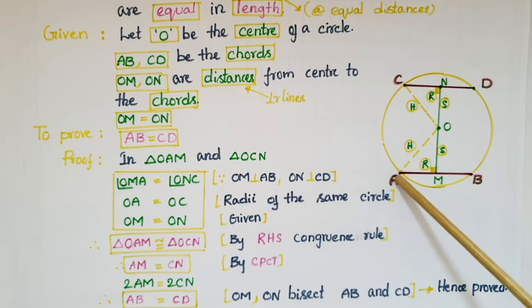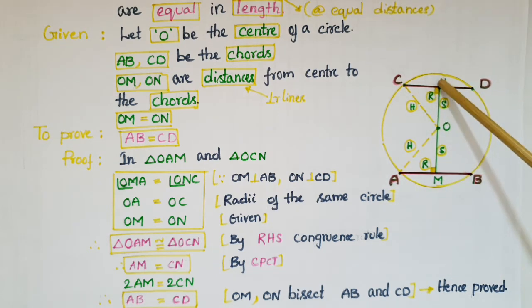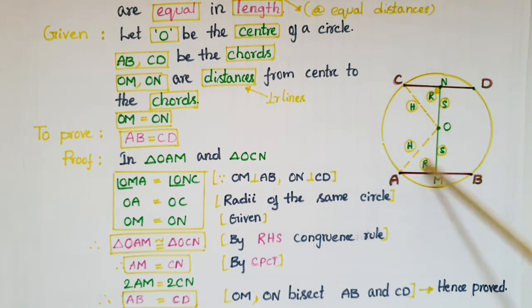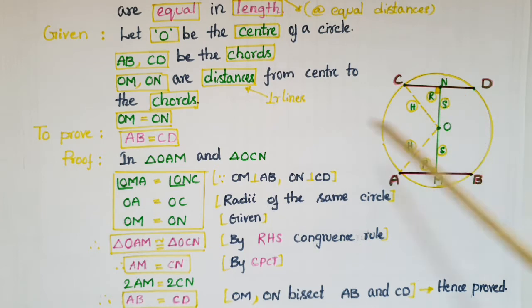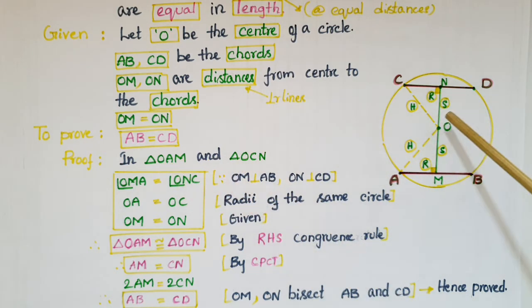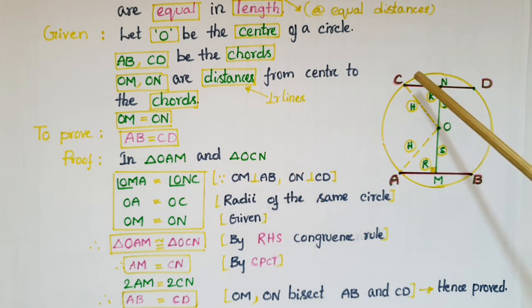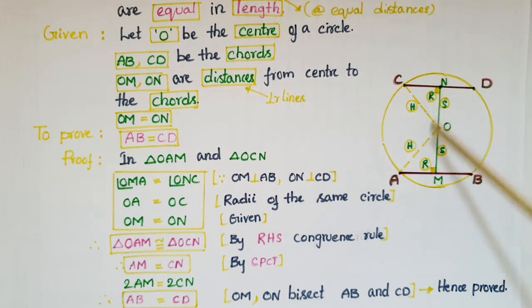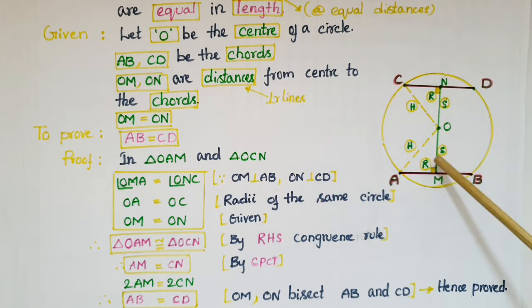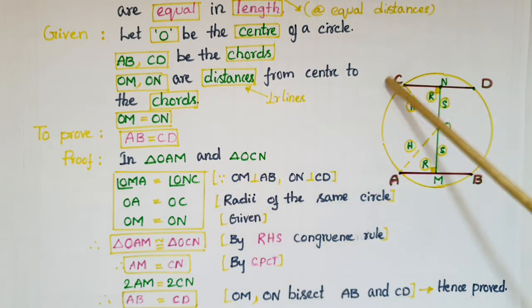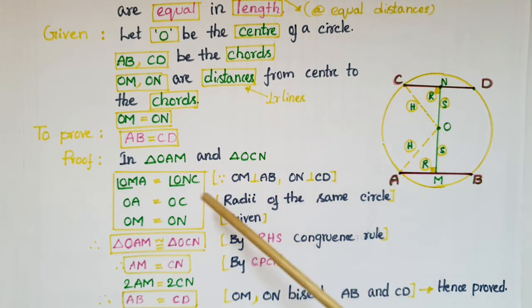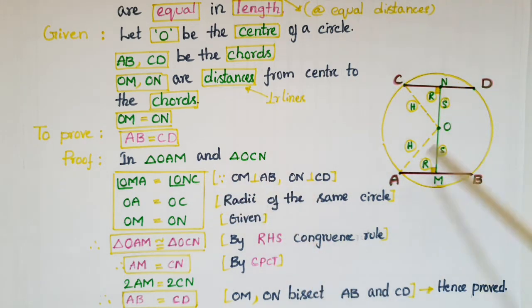To prove AB equals CD, we first need to prove that AM is equal to CN, as these are sides of the two triangles. Take triangle OAM and triangle OCN. These two angles are right angles because these two lines are perpendicular lines, so angle OMA equals angle ONC equals 90 degrees.